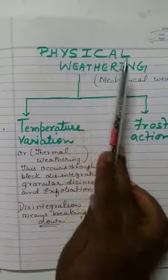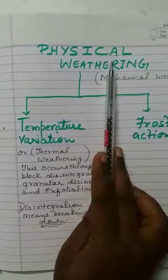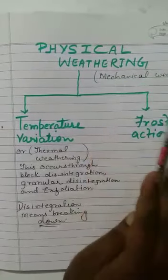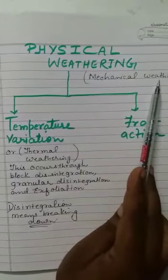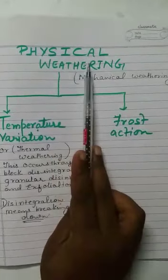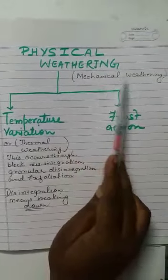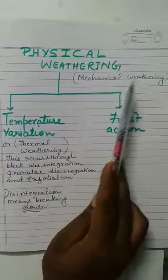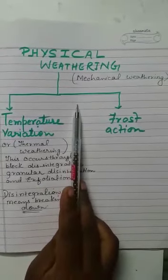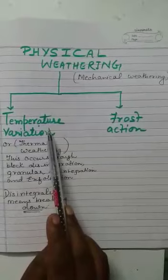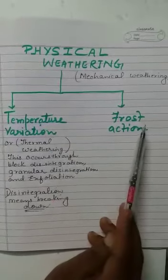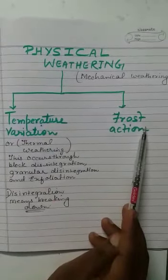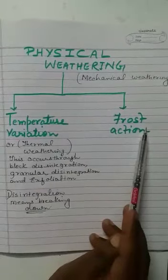Physical weathering, or you can say mechanical weathering - this physical weathering is also known as mechanical weathering. This is divided into two parts: one is temperature variation, another one is frost action.